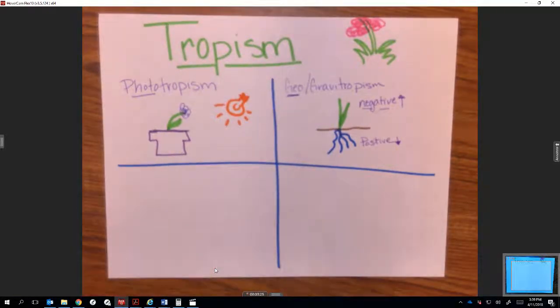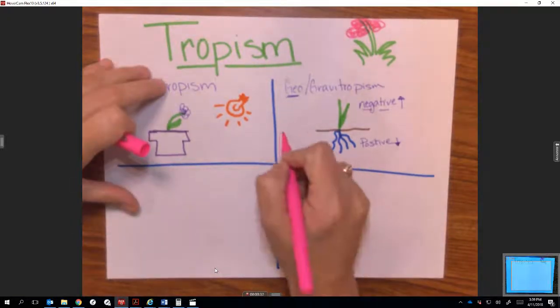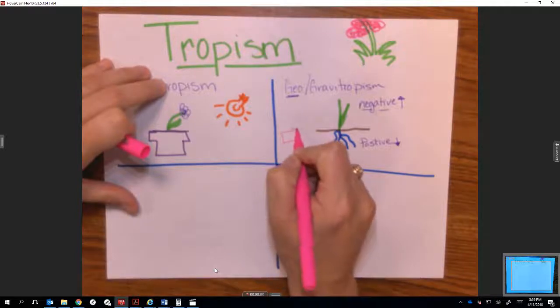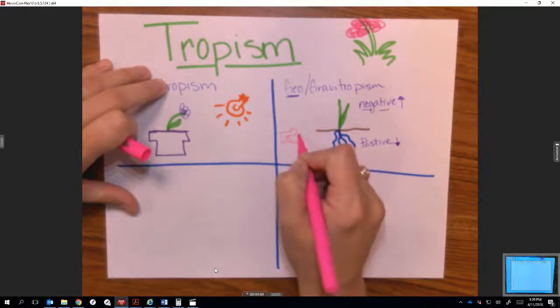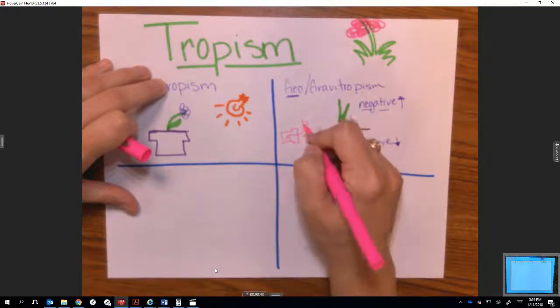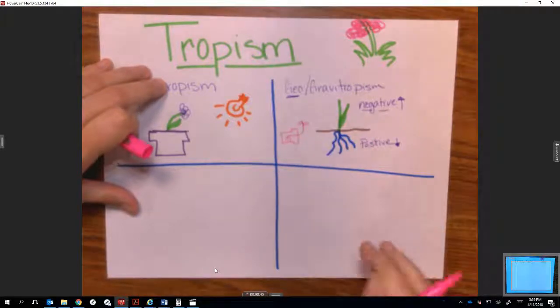If you have a potted plant and it were to fall on its side, that potted plant would actually grow based on the way that gravity is pulling it. The roots would start to grow down and the stem of the plant would actually bend up away from gravity.